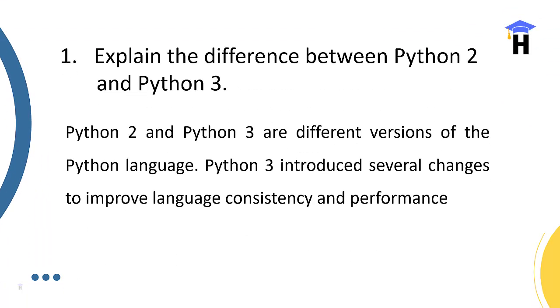Explain the difference between Python 2 and 3 versions. This is a super easy answer. Python 2 and 3 are the latest versions released. The differences: Python 3 introduced several changes like improvement of language consistency and performance rather than Python 2.